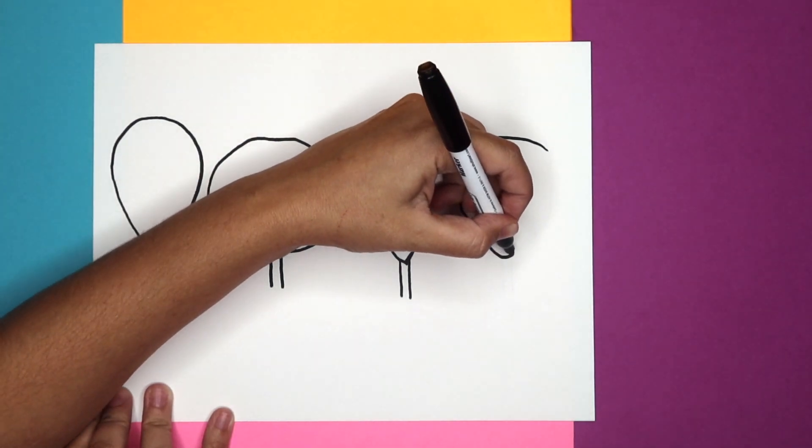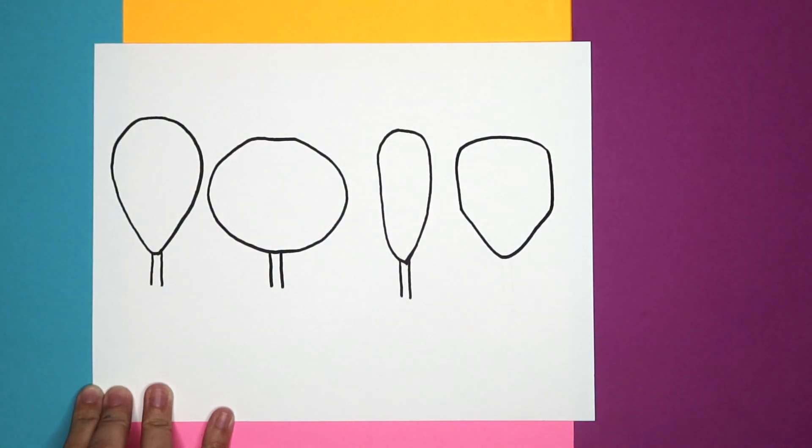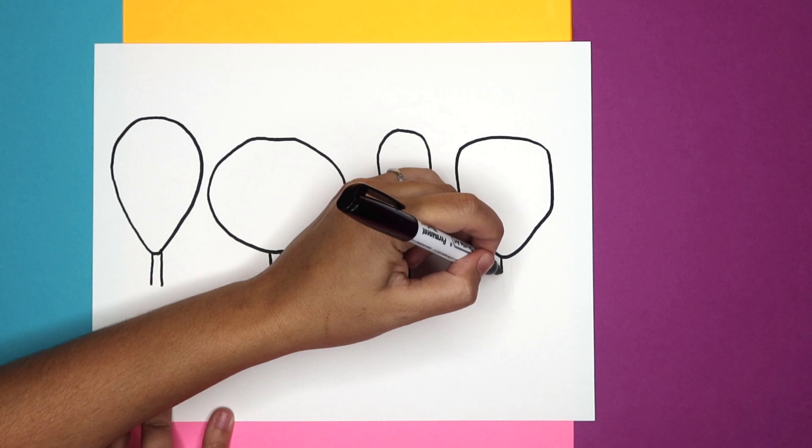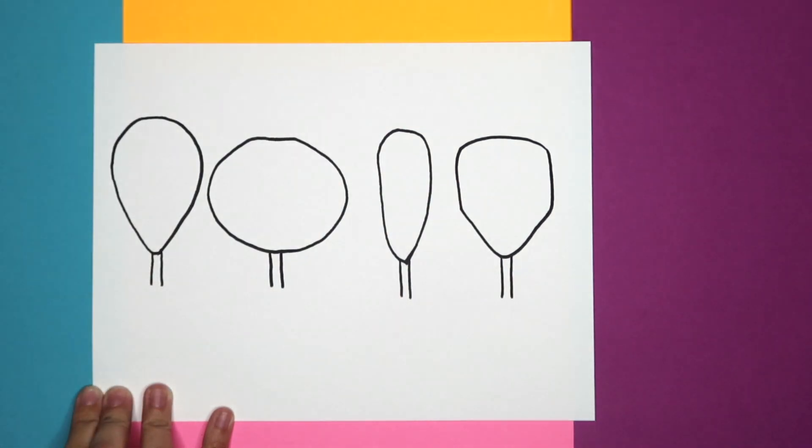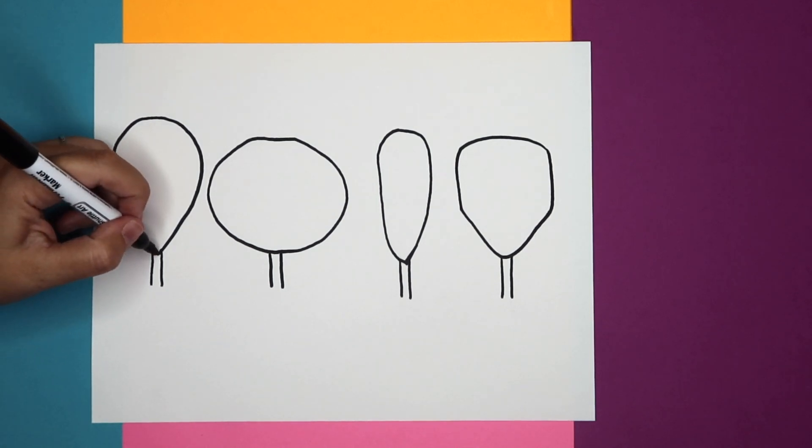This one's going to have a more angular head where the sides are a bit squarish and the chin is again pointy and the top of the head is wide.